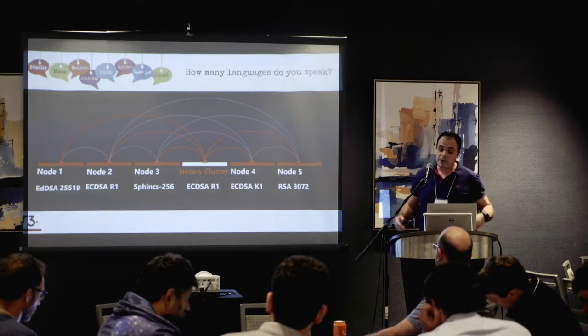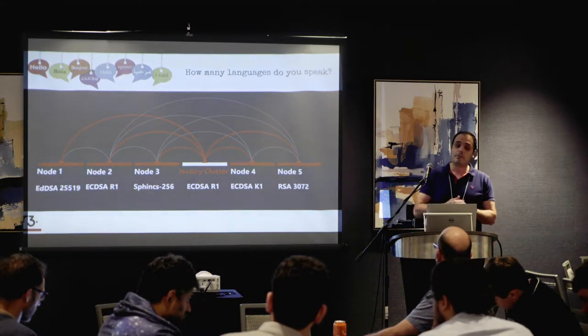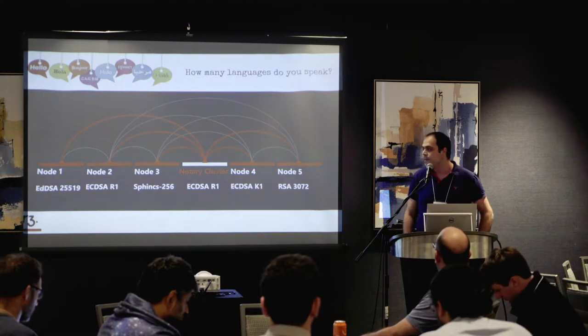A lot of people are trying to use a belts-and-braces approach — composite keys — where they have one RSA key, one ECDSA key, and one SPHINCS key, and they sign the transaction with all of them. If one breaks, we're still secure using a threshold scheme, like two-out-of-three.